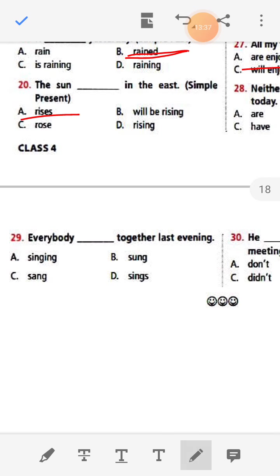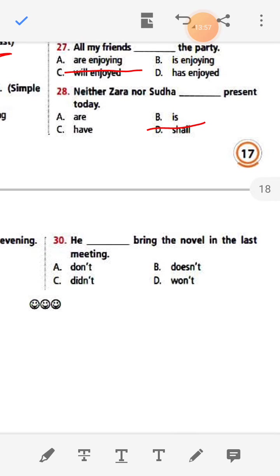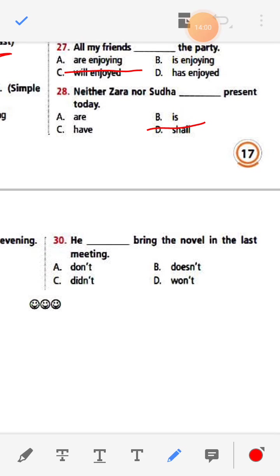Number twenty-nine: Everybody dash together last evening. Options: singing, sang, sings. It already passed, so the answer is 'sang' — Everybody sang together last evening. Number thirty: He dash bring the novel in the last meeting. Options: don't, does not, did not, won't. The answer is 'did not' — He did not bring the novel in the last meeting.